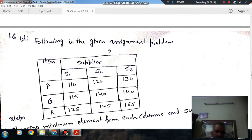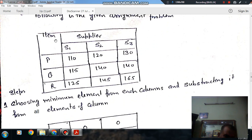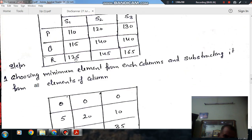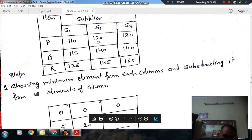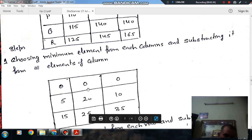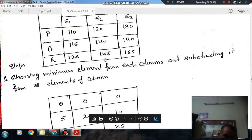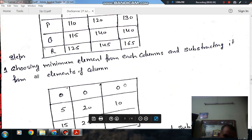So this is the typical assignment problem and this table is given. Now, following the steps of assignment problem, choosing the minimum elements from each column and subtracting the minimum elements from each column. Here the minimum element is 110. If you subtract it from all the elements of the column, then it will be 0 and this will be 5, this will be 30. Similarly, here the minimum element is 120, so it is 0, this is 20, and similarly 130, 140 and 160.